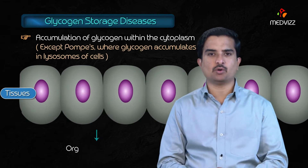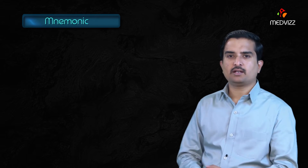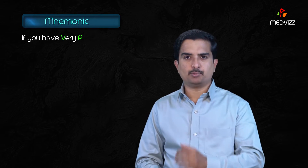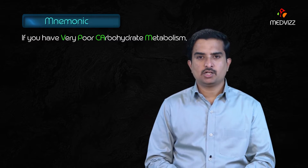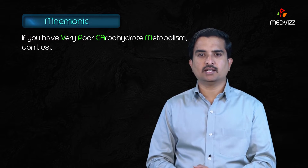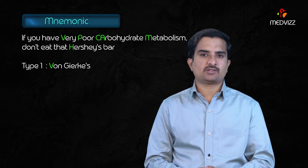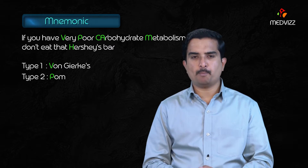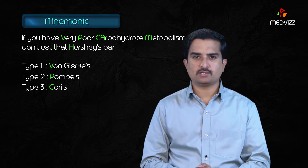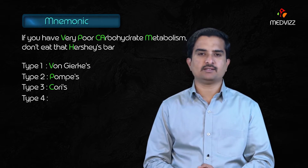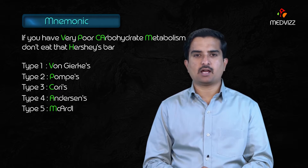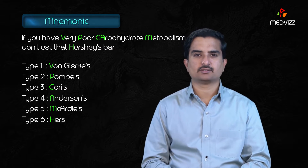Accumulation in one or more tissues leads to organ dysfunction. The mnemonic is: 'If you have a very poor carbohydrate metabolism, don't eat that Hershey bar.' Type 1 is Von Gierke's, Type 2 is Pompe's, Type 3 is Cori's, Type 4 is Anderson's, Type 5 is McArdle's, and Type 6 is Hers'.